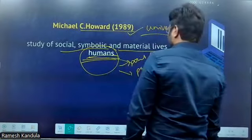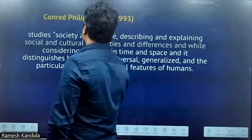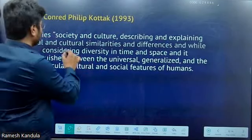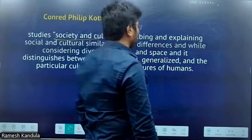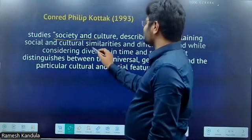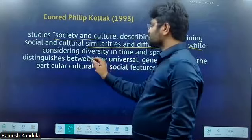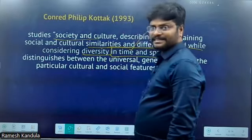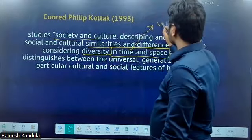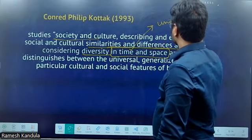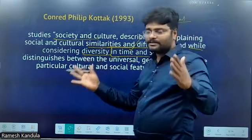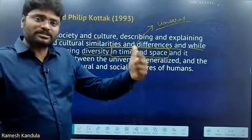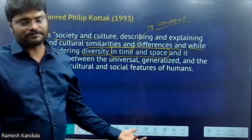The third definition is Conrad Philip Kottak, who defined socio-cultural anthropology as the study of society and culture, describing and explaining social and cultural similarities and differences while considering the diversity in time and space. Here you can see that 'in time and space' reveals that it is universal in scope. Space-wise, it covers all societies present on different continents — if a society is made by humans, it falls under the scope of socio-cultural anthropology.